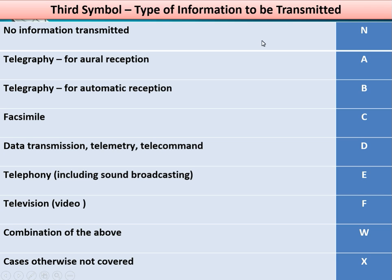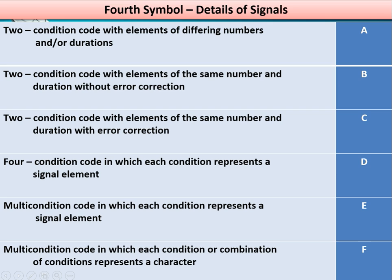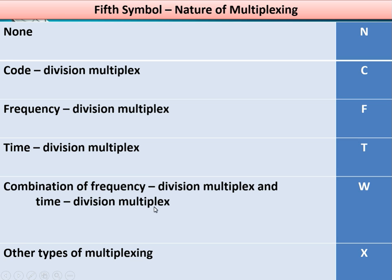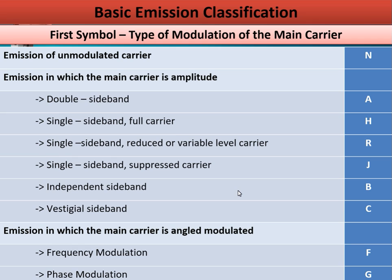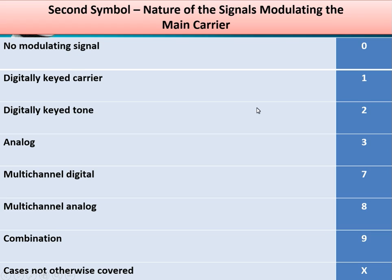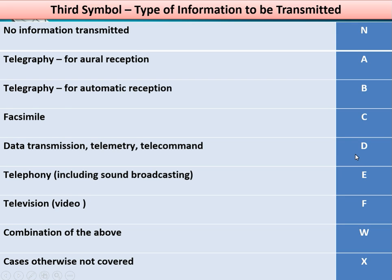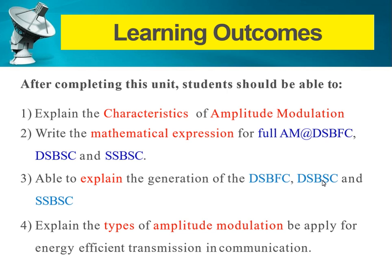The third symbol represents the type of information to be transmitted. Typically three symbols are used, though sometimes a fourth and fifth symbol are added for the type of multiplexing. For example, the designation A3E: the letter A means double sideband for the main carrier; 3 means the modulating signal is analog; and E is used for telephony, including sound broadcasting. You determine the meaning of each letter and number based on the reference table.